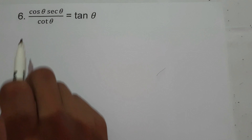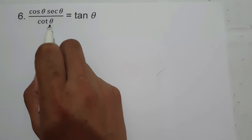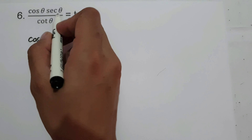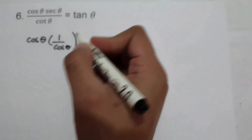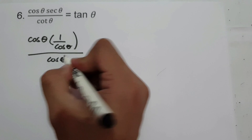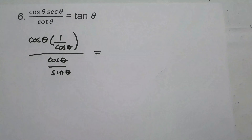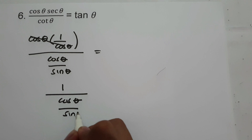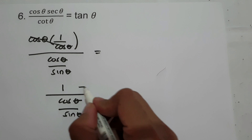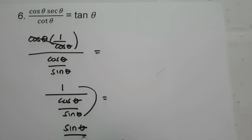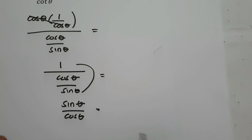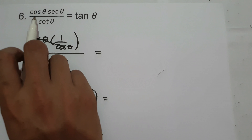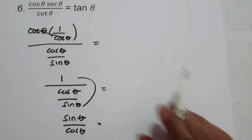On example number 6, we have cosine theta times secant theta all over cotangent theta equals tangent theta. So to prove the given identity, let us rewrite cosine theta and let us have secant theta as 1 over cosine theta. And let us change cotangent theta as cosine theta over sine theta. So let us cancel cosine. And we have 1 over cosine theta over sine theta. To simplify, let us have 1 times sine theta, that is sine theta over cosine theta. And we all know that sine theta over cosine theta is tangent theta. Therefore, we prove that cosine theta times secant theta over cotangent theta is equal to tangent theta.